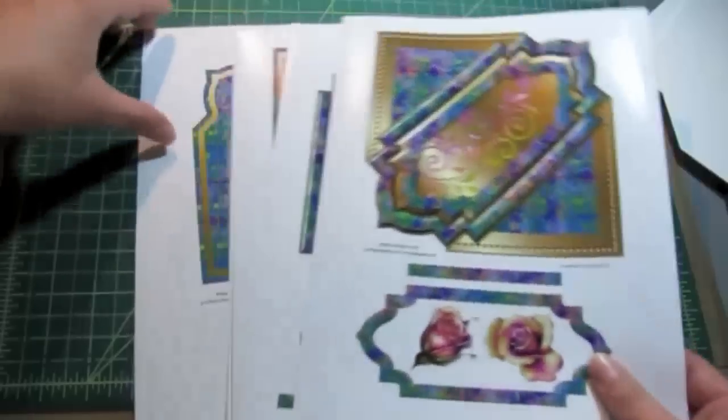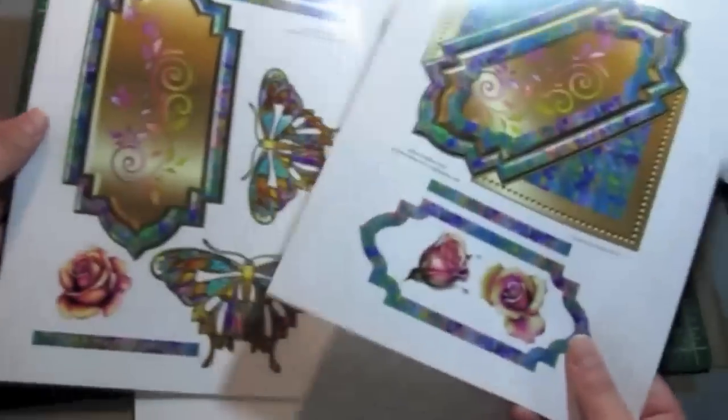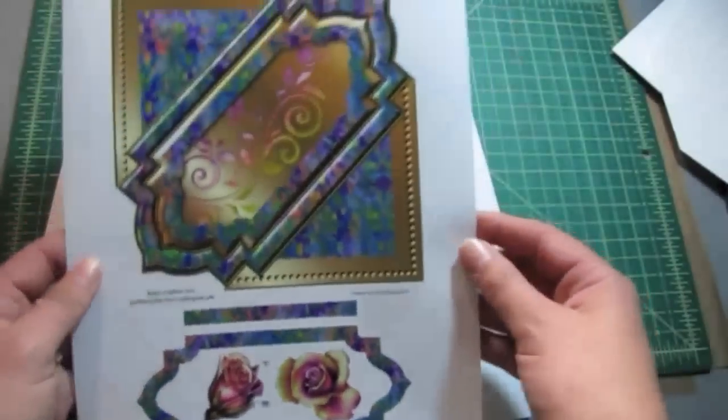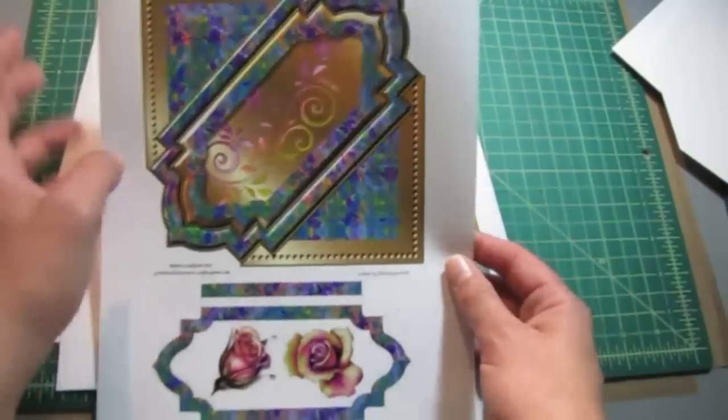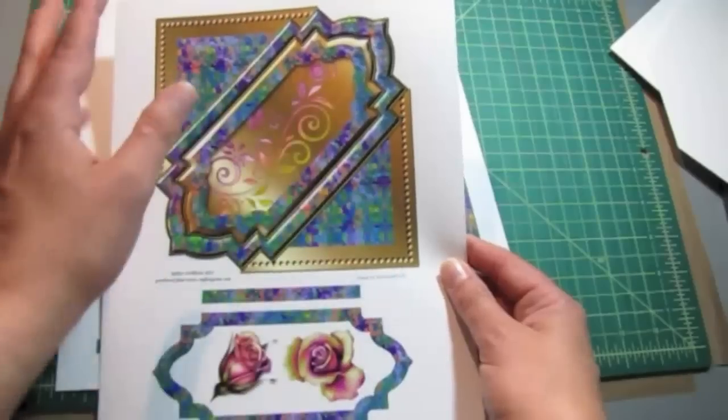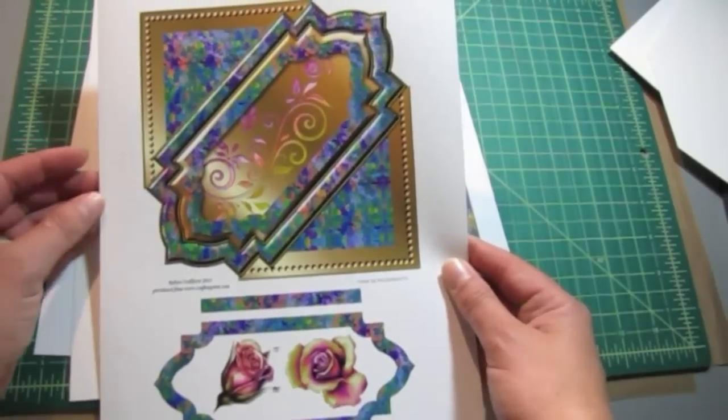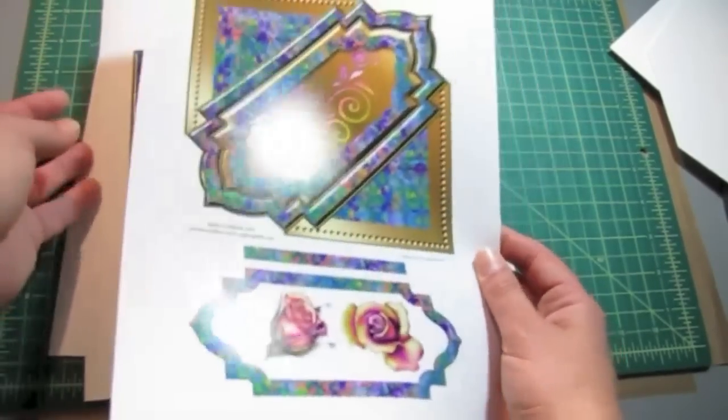One thing I really like about the way Robin has done her sheets is that when you look at the main sheet here, she doesn't have the flowers or the butterfly on it, so you could either put them anywhere or maybe not even use those and use other elements of your own.